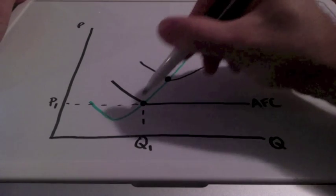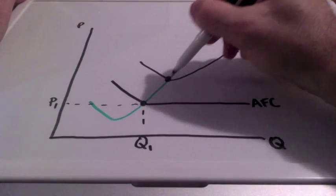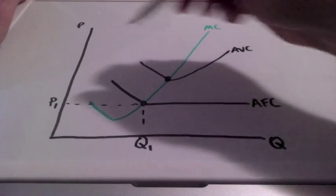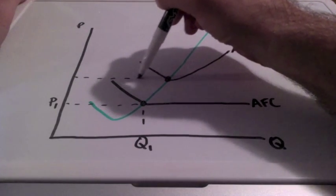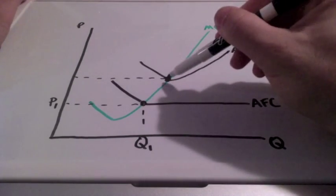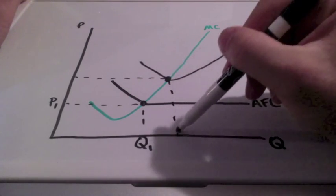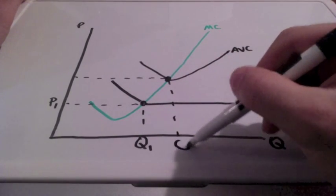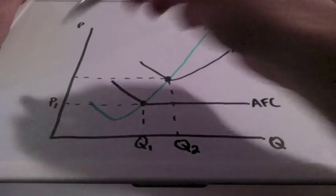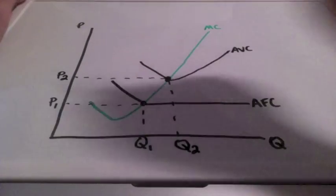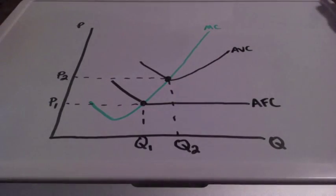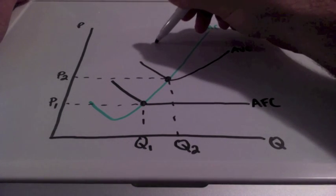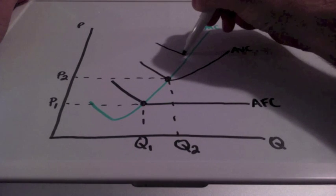As you can see, we're moving upward along the marginal cost curve. This cost curve is going to show us that our price and our quantity are increasing because we're moving along marginal cost.